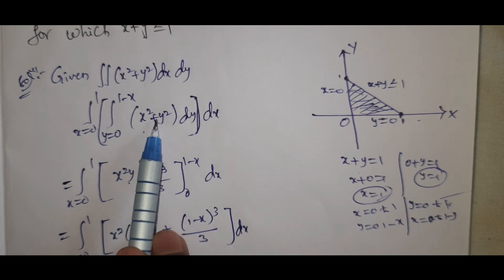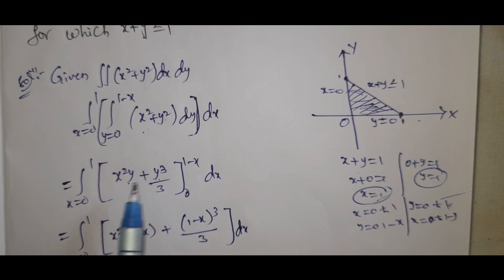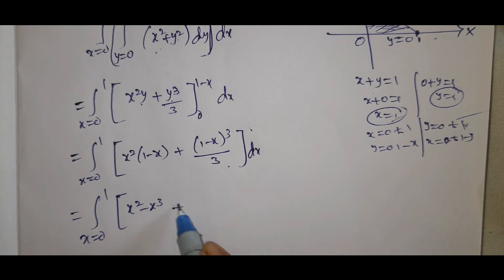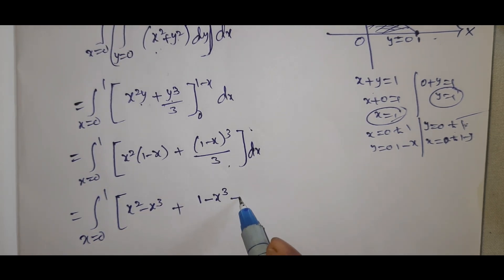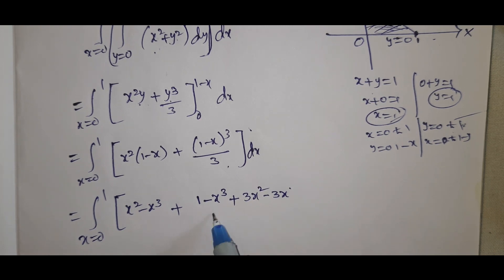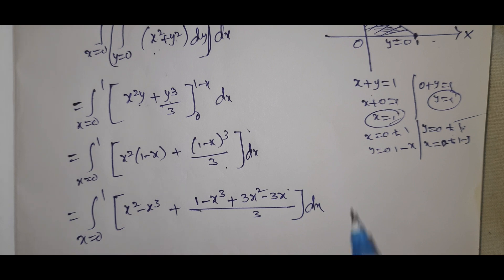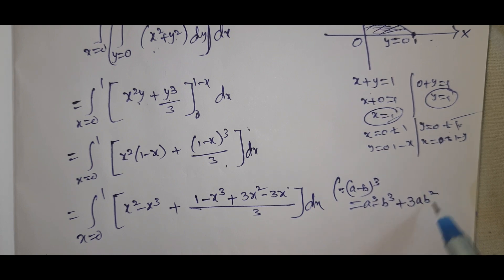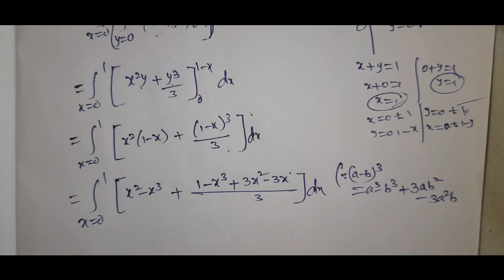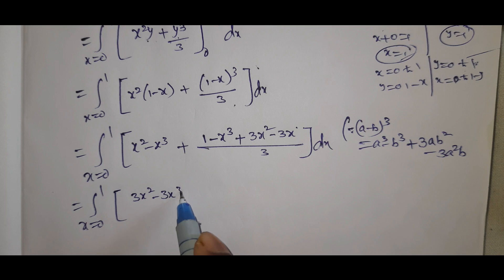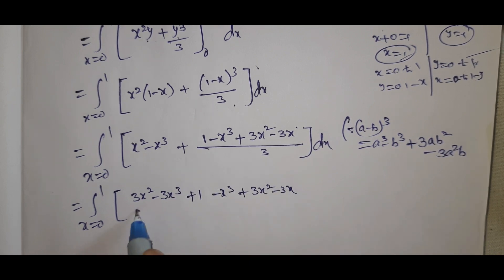Substituting the upper limit, we get x²(1 − x) + (1 − x)³/3. Expanding (1 − x)³ using the identity (a − b)³ = a³ − 3a²b + 3ab² − b³, we get 1 − 3x + 3x² − x³. The integrand simplifies to: integral from 0 to 1 of (1/3)(−4x³ + 6x² − 3x + 1) dx, combining like terms.